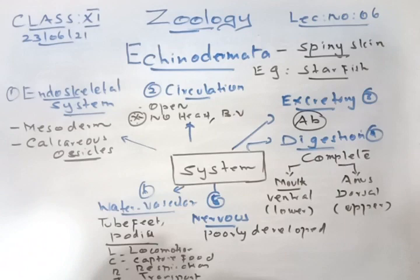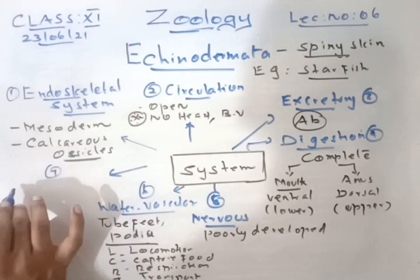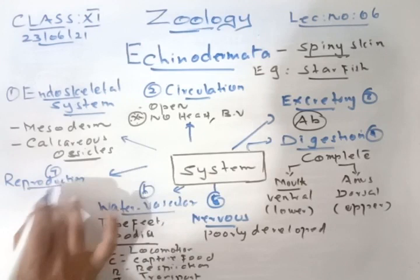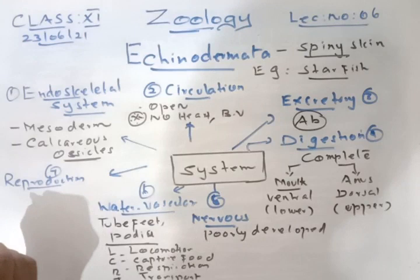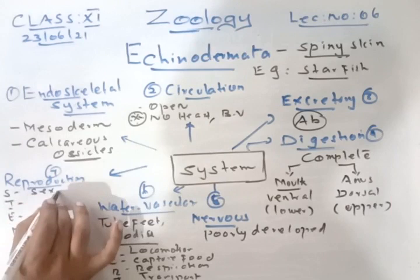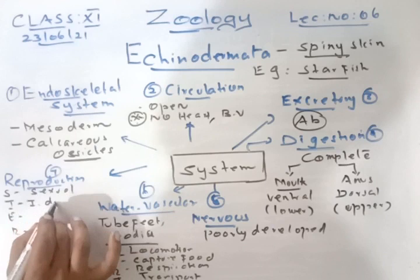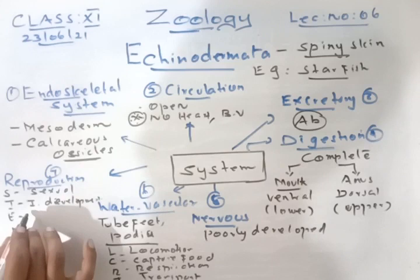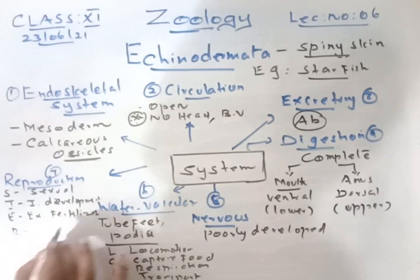Seventh system: reproduction. Remember SIER: S for sexual reproduction, I for indirect development, E for external fertilization, R for regeneration. Regeneration means if a body part is lost it regenerates again.